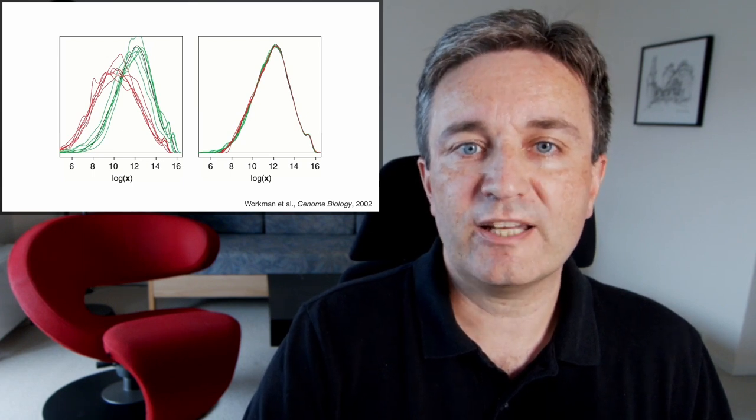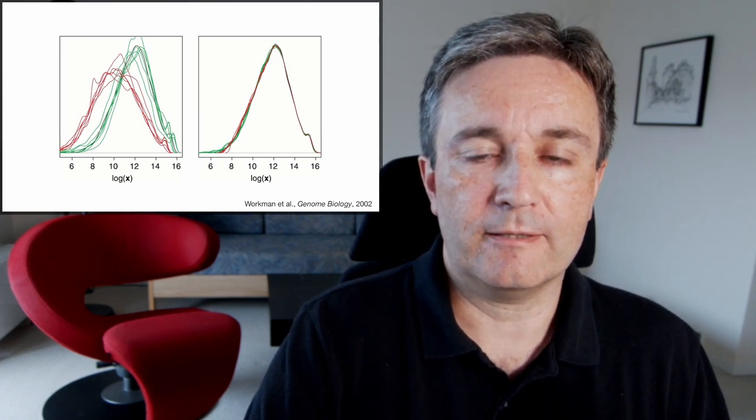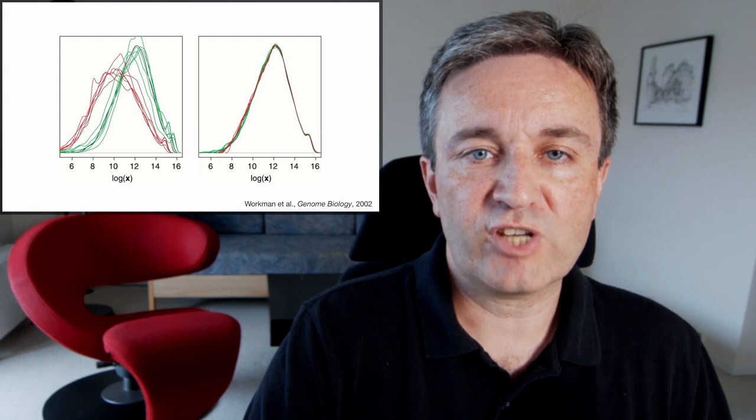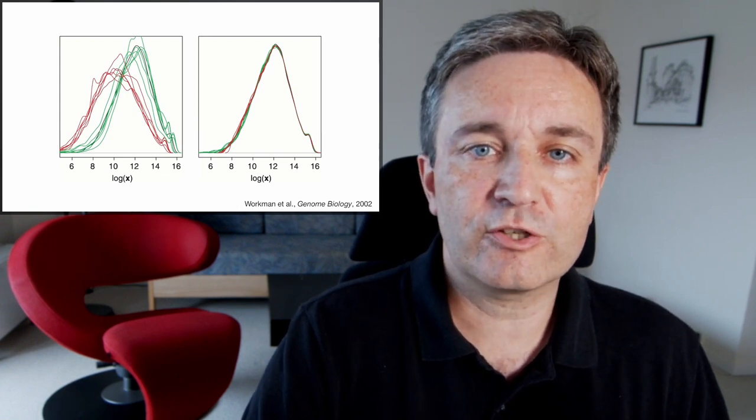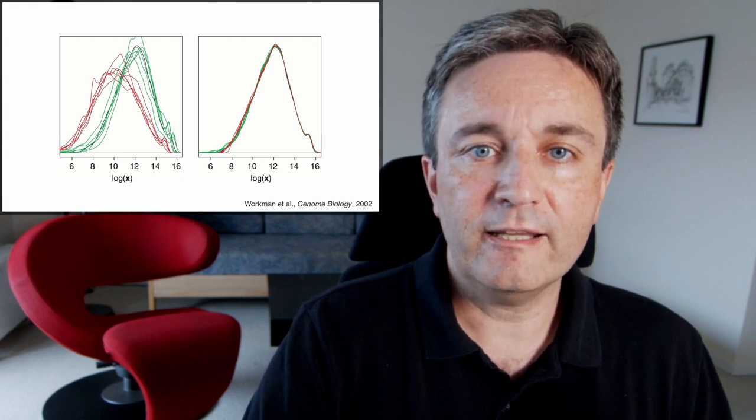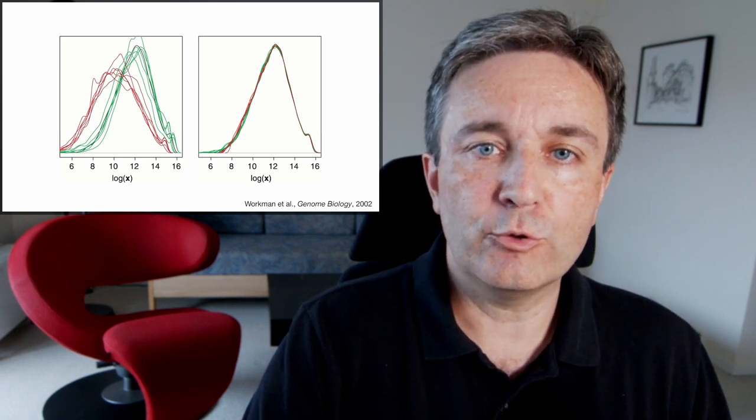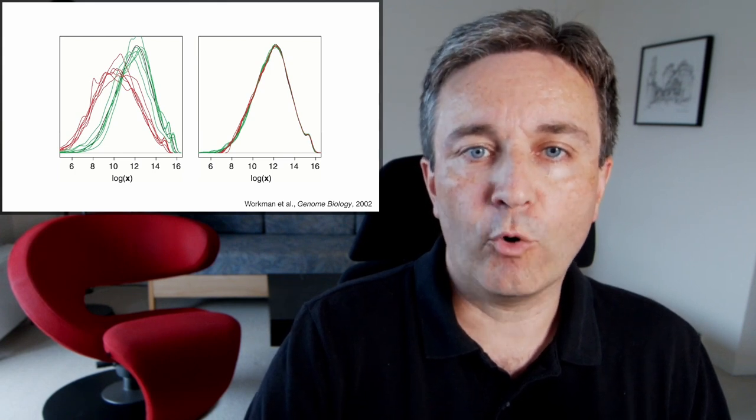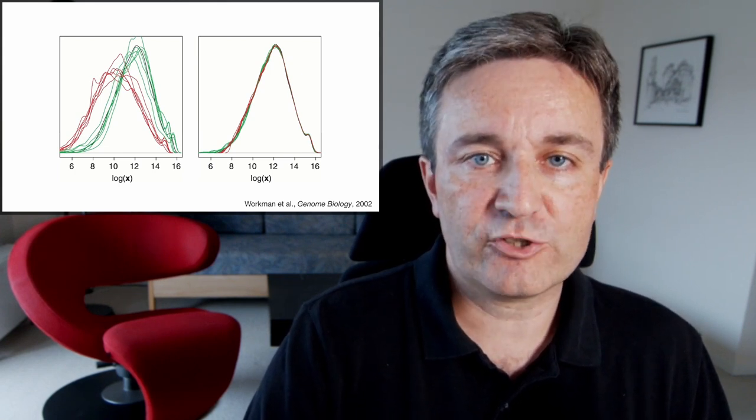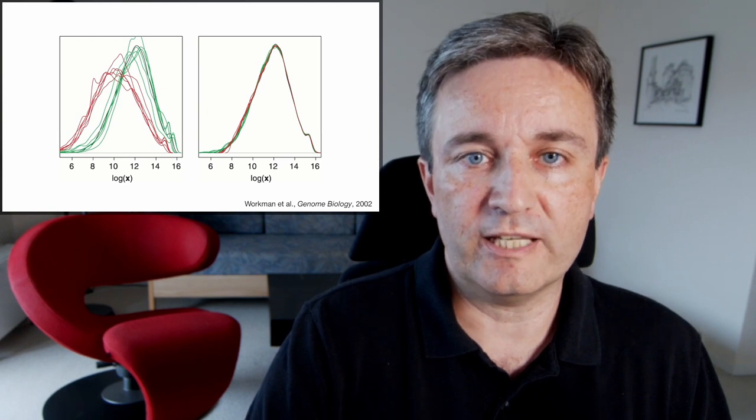On the left, you see an example of some two-channel array data. And you can clearly see that the samples labeled green are shifted systematically towards higher intensities than those labeled red. Non-linear normalization takes the distributions and superimposes them on top of each other as you see on the right, giving you more comparable values which is a better starting point for identifying differentially expressed genes.